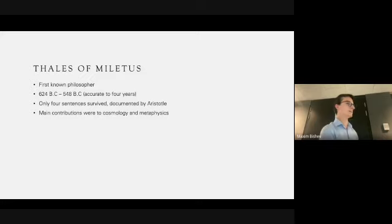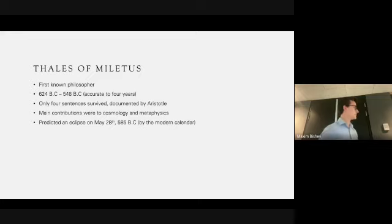Main contributions were to cosmology and metaphysics, which is the study of reality as a whole. Really fundamental questions like what is the world made of, what is the nature of reality, is time linear, and so on. These are all metaphysical questions. The only accurate date we have of Thales' life was this date, which by the modern calendar would be May 28th, 585 BC, when he predicted an eclipse.